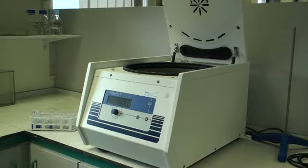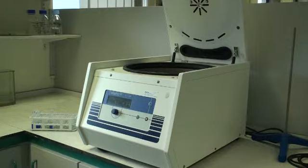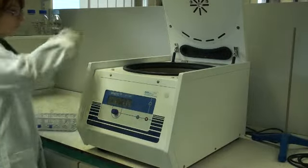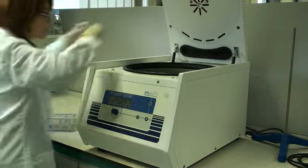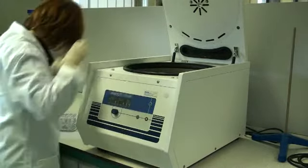After the tubes have been allowed to stand at room temperature for approximately 5 minutes, stir them again on the vortex mixer and then place the tubes into a centrifuge and run the centrifuge for 10 minutes at 3000 RPM or approximately 1800 G.